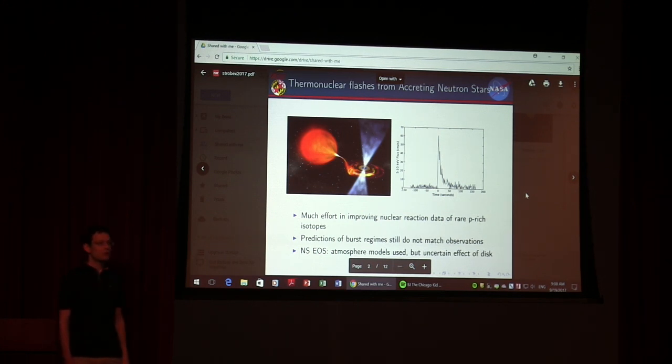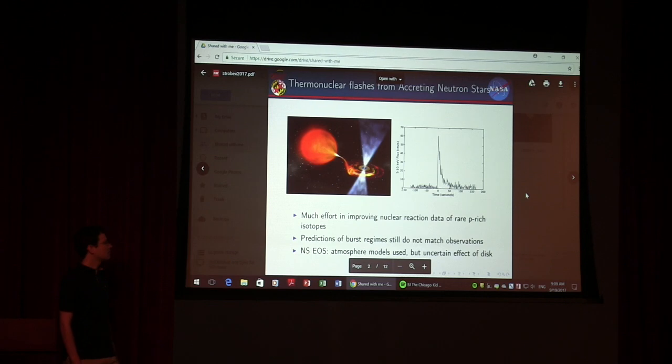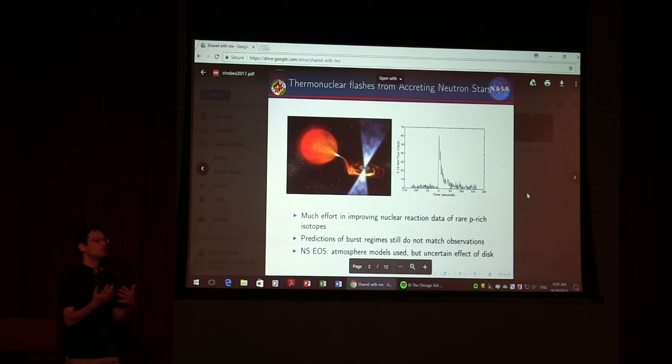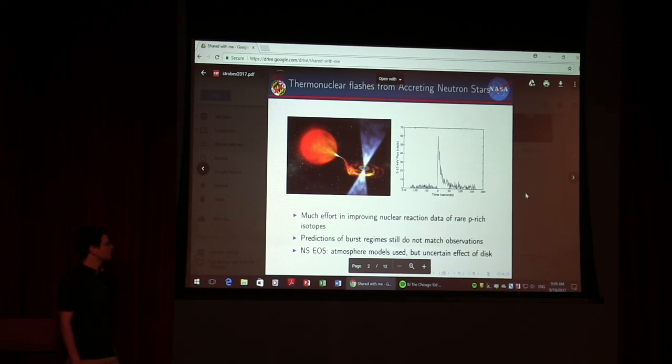A lot of time has been devoted to constraining the mass and radius of neutron stars using X-ray bursts. Bursts are unique in that they can constrain both mass and radius simultaneously. Model atmosphere spectra have been developed, but there are systematic uncertainties related to whether you're looking just at the neutron star or whether the accretion disc is coming in. Strobe-X will be able to contribute significantly here.